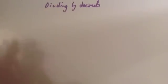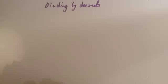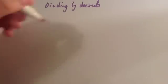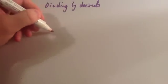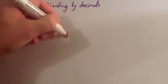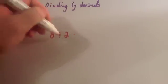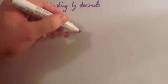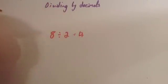In this video we're going to look at dividing by decimals. Before we do that, I want to look at some basic division facts. So let's have a look at 8 divided by 2. 8 divided by 2 is 4.